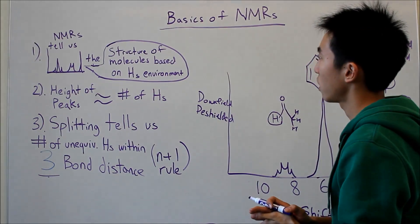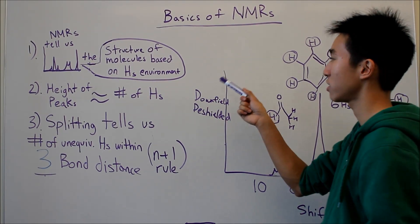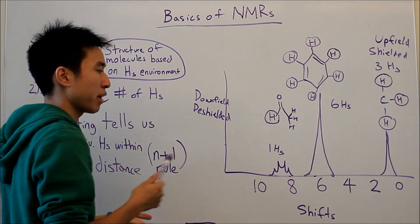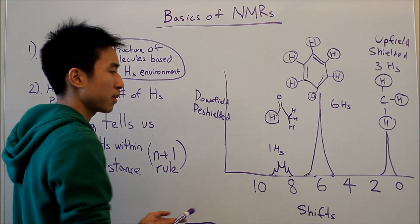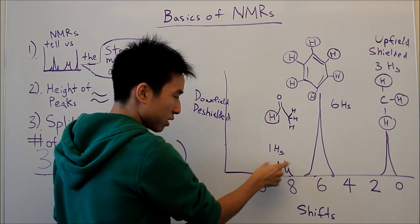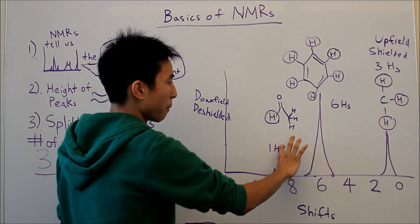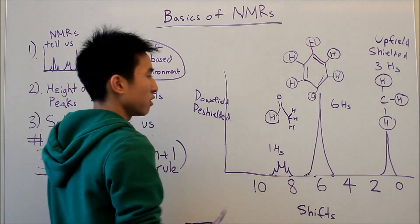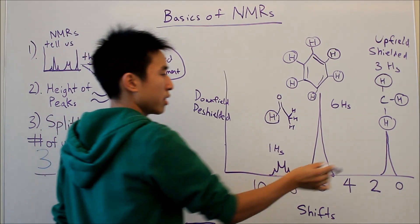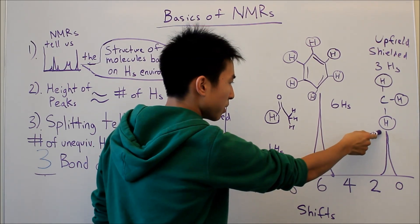The second thing that NMRs tell us is how the height of the peaks is related to the number of hydrogens. Well, it turns out that the height of the peaks are directly correlated to the number of hydrogens they represent, so that's why this peak is so low down here. It's because this shift is going to be about one-third of this one here, because it only represents one hydrogen. And then this peak here represents three hydrogens, so that's why it's about here.